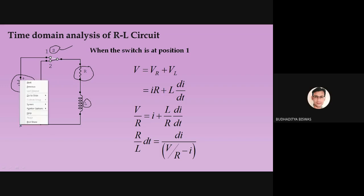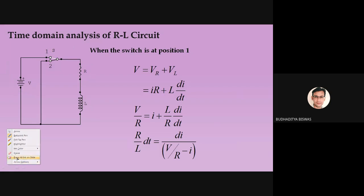When the switch is at position one, this is Case 1. The voltage source is connected across the series combination. Applying KVL, the voltage source distributes itself among the resistance and the inductance. So the voltage across the resistance VR and the voltage across the inductance VL — their sum equals the external voltage source V.